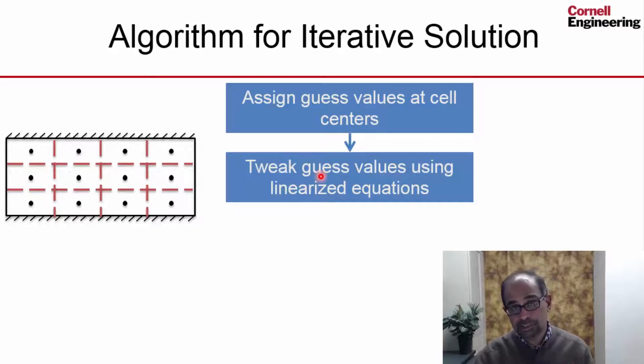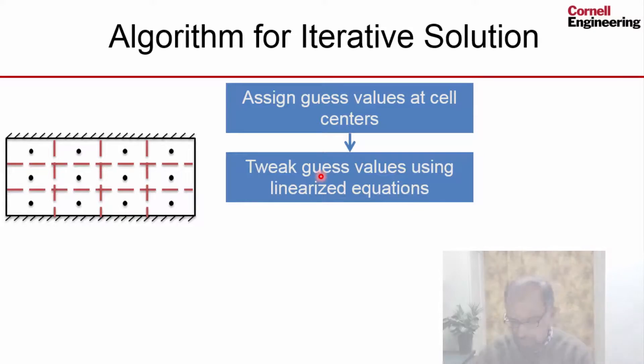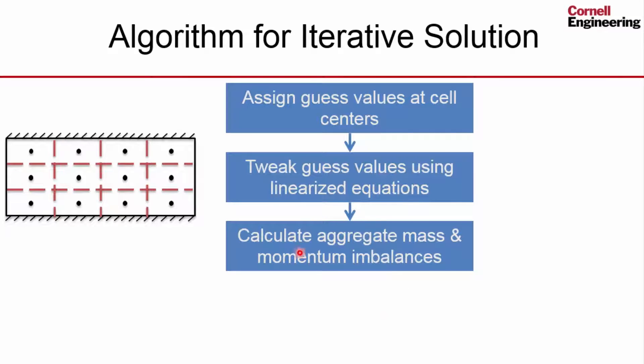So my current solution after I tweaked it will have a linearization error in it. And so I need to know what the level of linearization error is. And I assess that by calculating the aggregate mass and momentum imbalances, like we talked about.